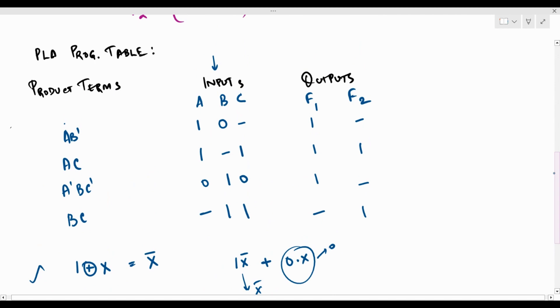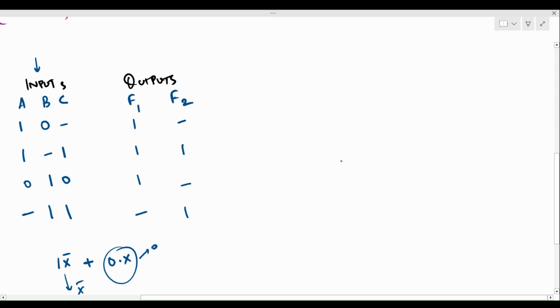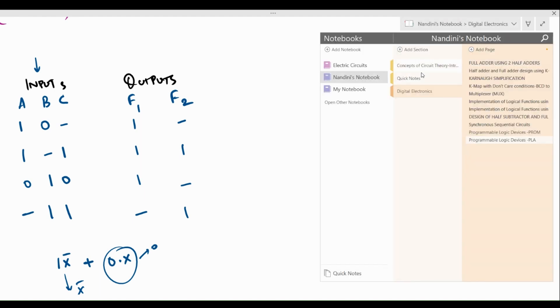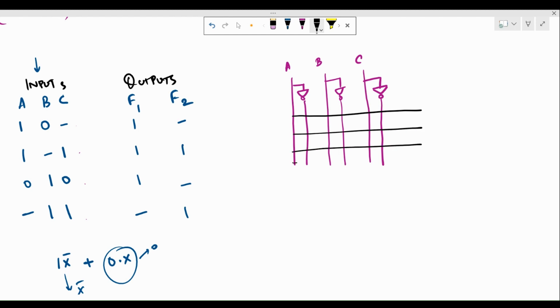So we need to remember these two things because in the final structure of our PLA, we will be ending it with an XOR. Let us now try to implement this PLA programming table using the AND array and the OR array. To do that, we first need to draw the input lines and their inverted versions. So let us draw A. This would be A bar. Similarly, we have B and B bar, C with C bar. We have four product terms. So let me draw four lines representing each product term.